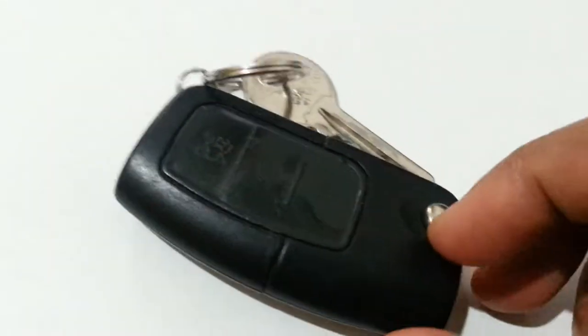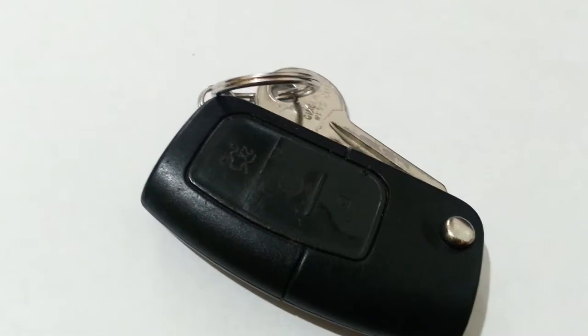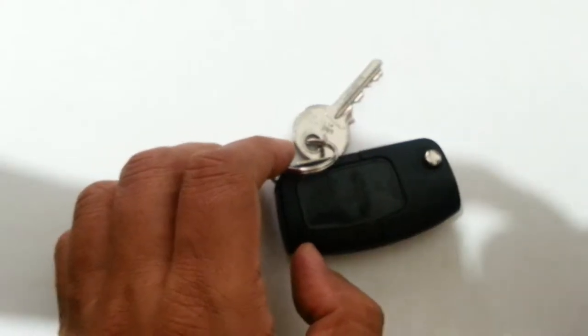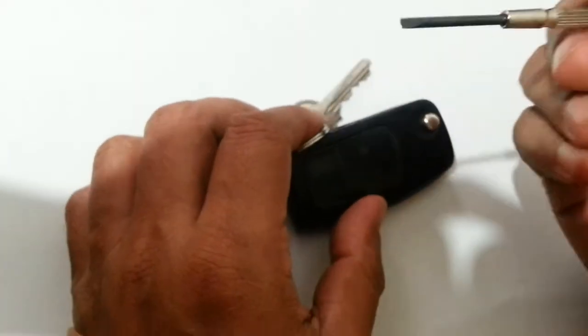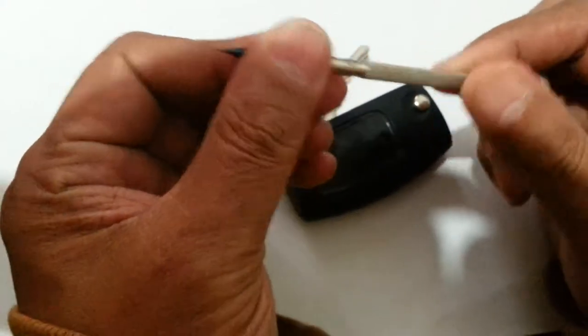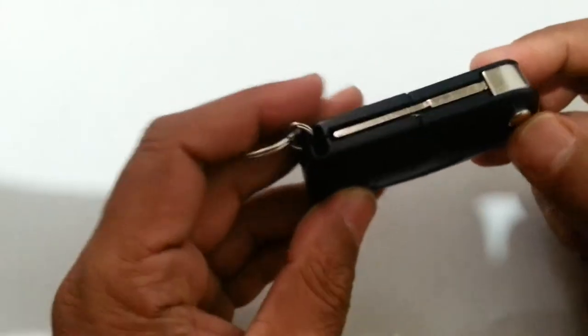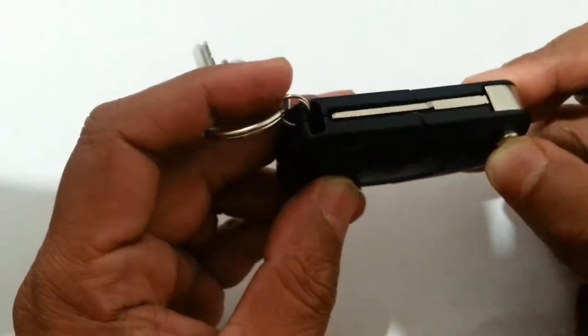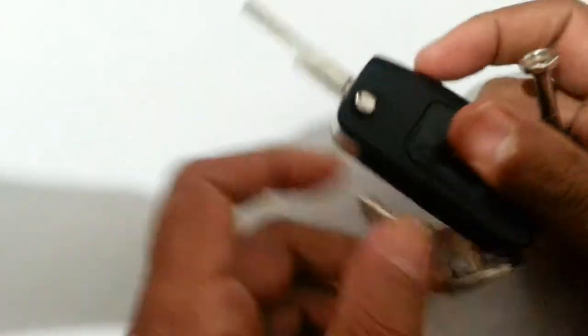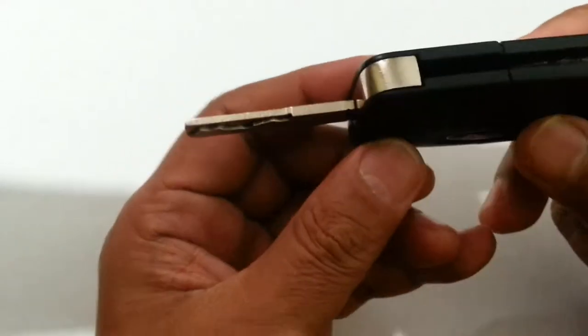The way to open the key, I'm going to show you now. So what you need, you need to have a small precision screwdriver or a very tiny small screwdriver. Once you open the key side inside the remote control.